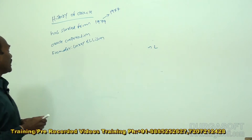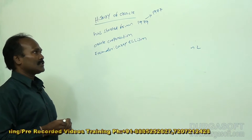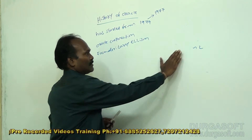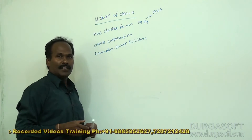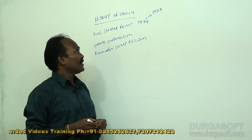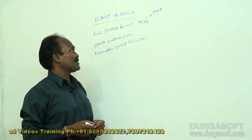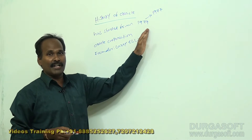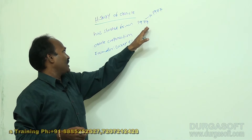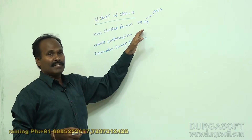Today we are going to discuss the history of Oracle. Before we enter into Oracle database, let me introduce Oracle history. The history of Oracle started from 1979 — in the year 1979, the Oracle Corporation was started.